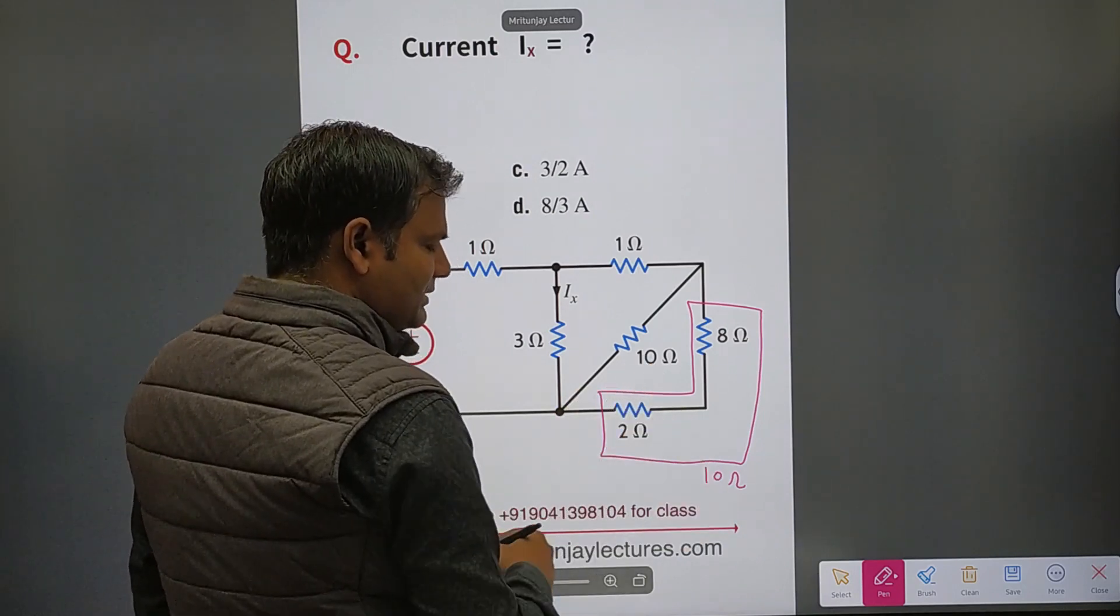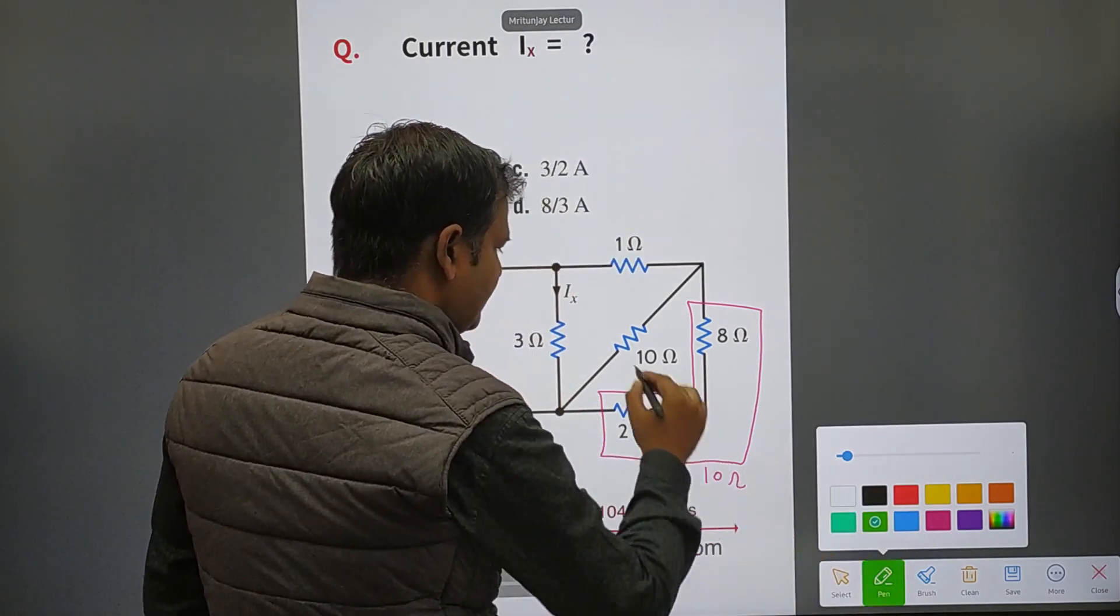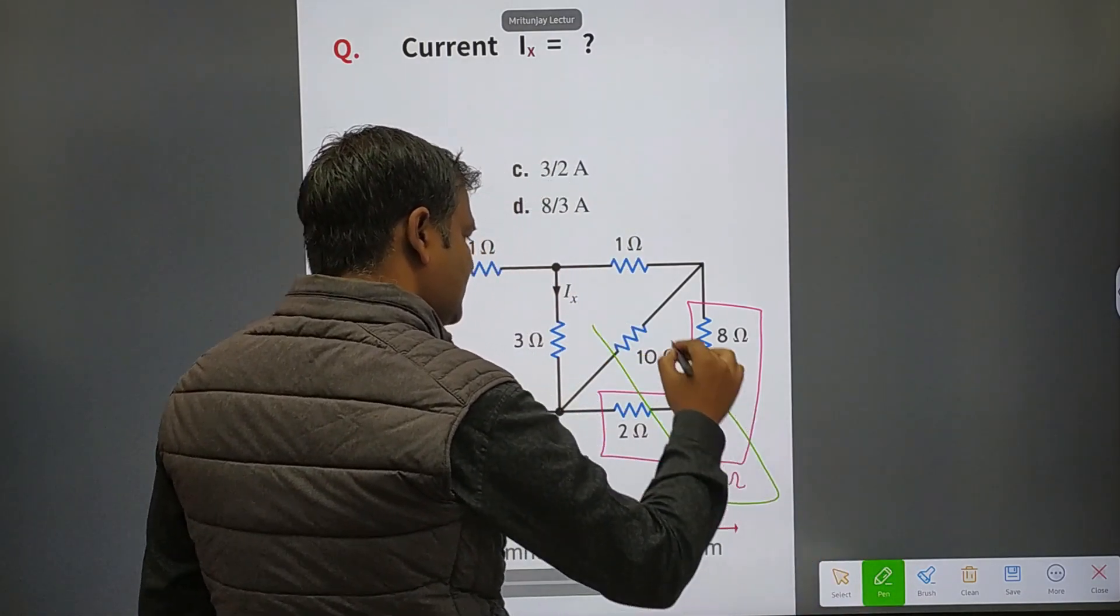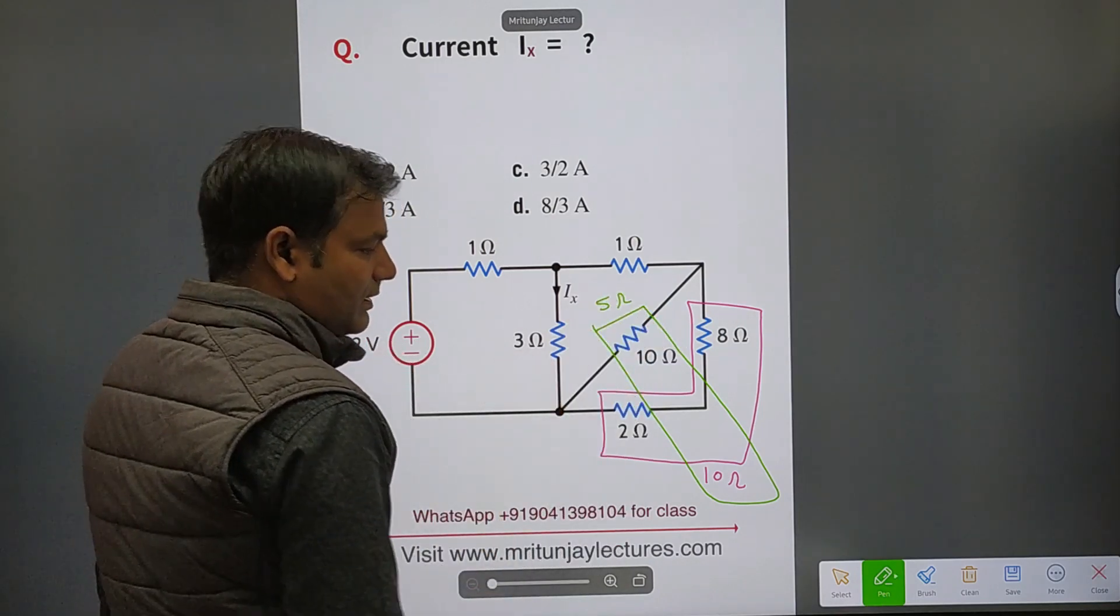10 ohm and 10 ohm are also in parallel, so you can make a combination of these two that is how much? 5 ohm. After that...